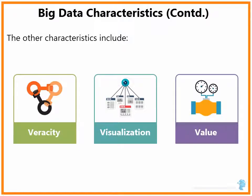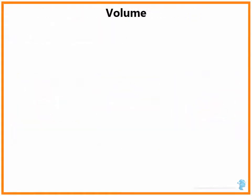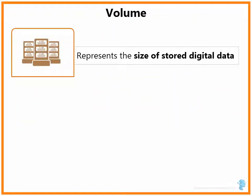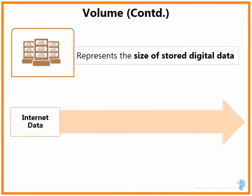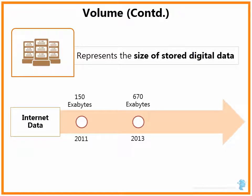Let us explore each of these three Vs in detail. The first V is volume. It represents the size of the stored digital data. Big Data is in terms of terabytes, petabytes and exabytes. Data on the internet was 150 exabytes in 2011 and 670 exabytes in 2013. In 10 years, it will be more than 7 zettabytes. Storage and processing of this much data will need new technology.